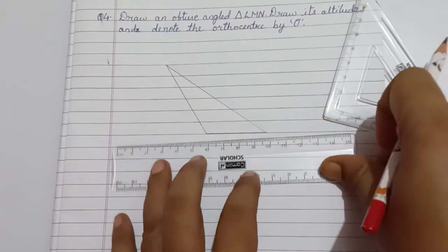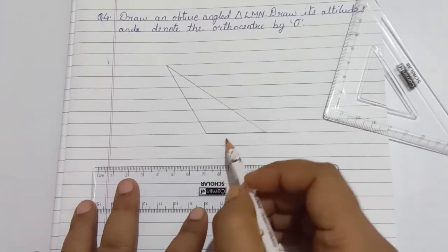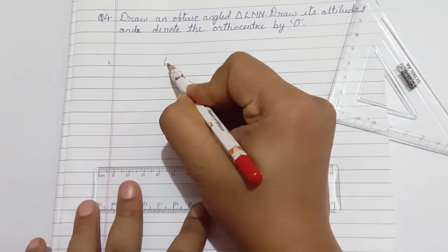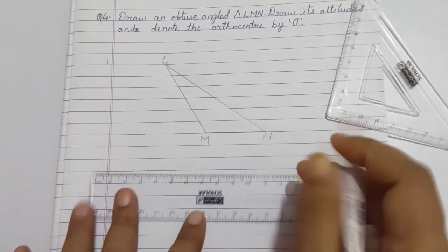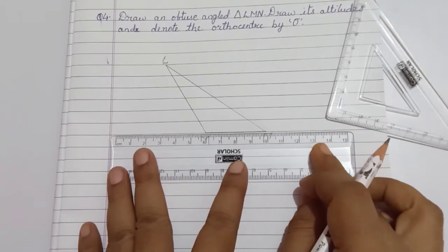Now, we will label this triangle as L, M, N. Align the scale to the base M, N.